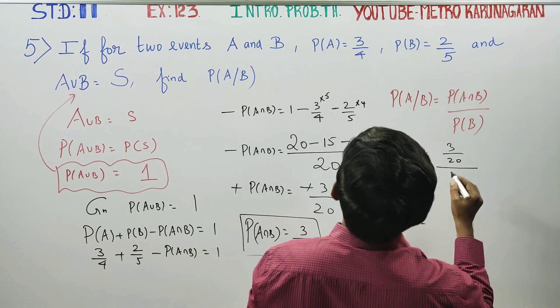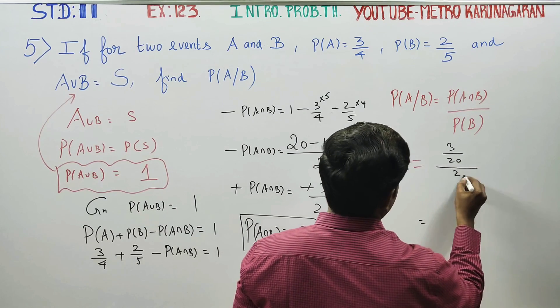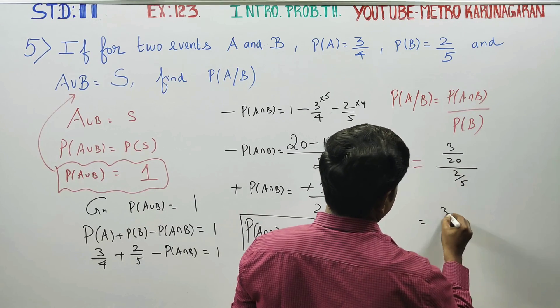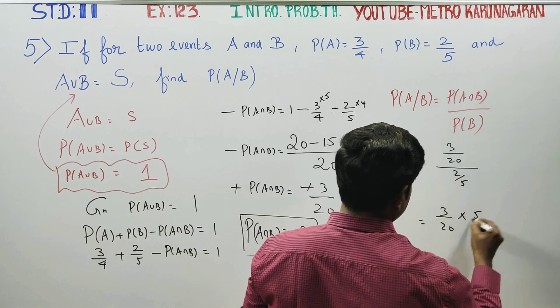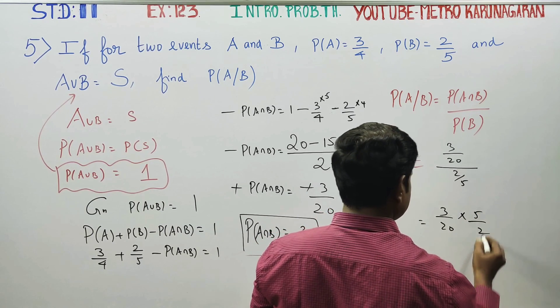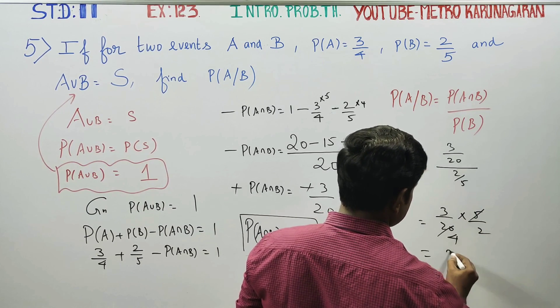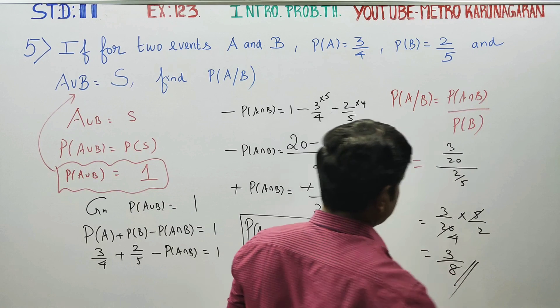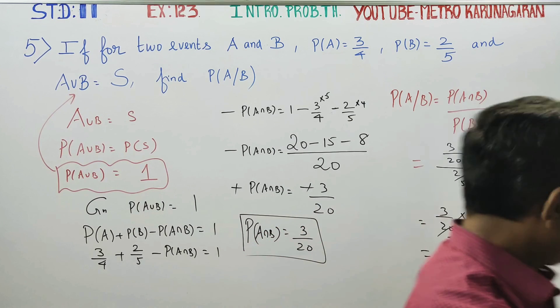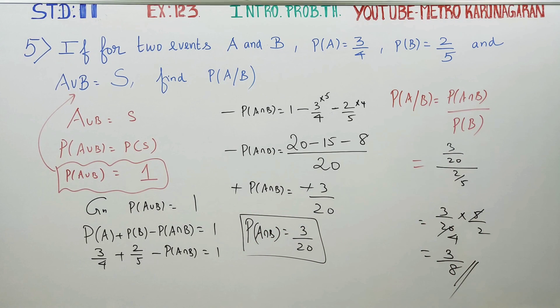Probability of B is 2 by 5. Computing: 3 by 20 into 5 by 2 gives 3 by 8. So 3 by 8 is your final answer. Okay, thank you.